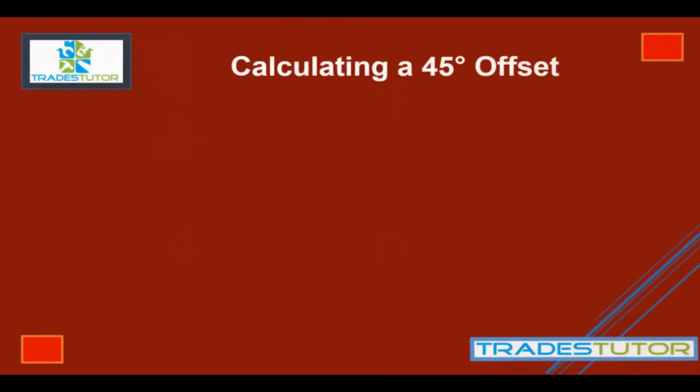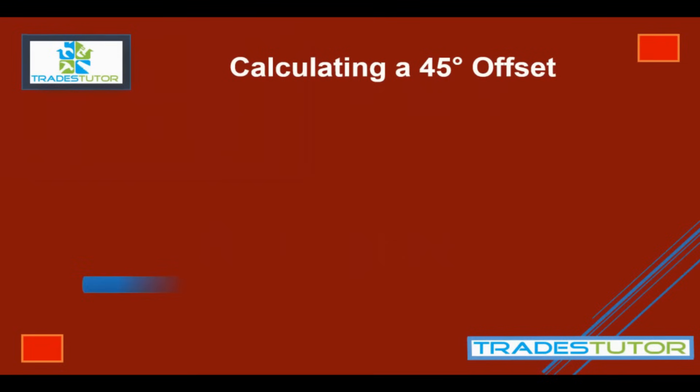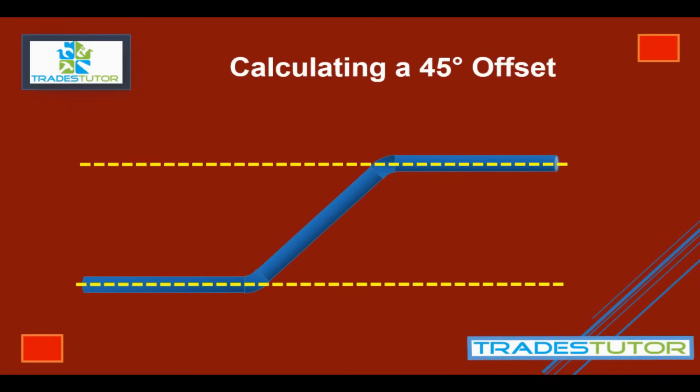First thing we're going to do is show you a little visual on what we're talking about. A piece of pipe goes, it offsets 45 degrees, and then offsets once again. So we've got to define some parameters of what we're talking about here. If we were to draw a horizontal line extending from that bottom pipe, and we were to do the same from the top, we would get a measurement, and that is actually our offset. We define it as our offset, so that red line there is the offset.